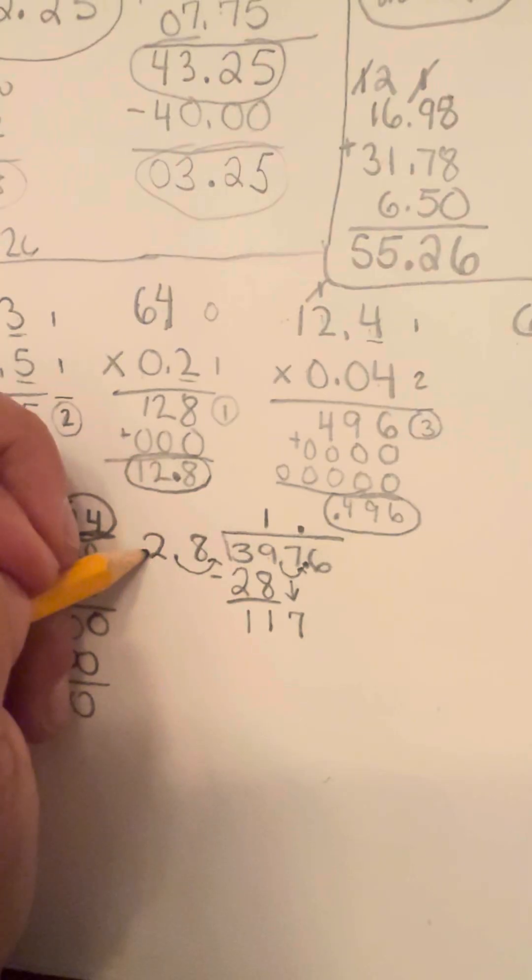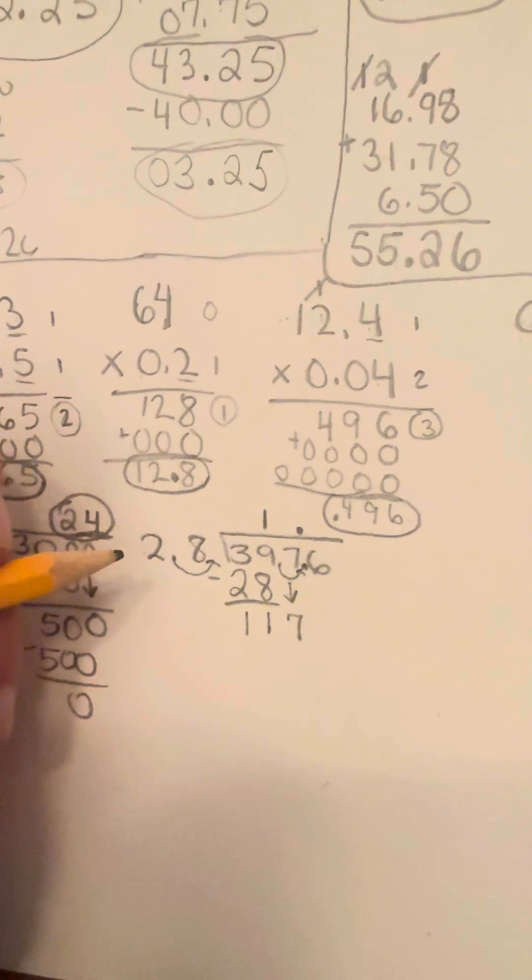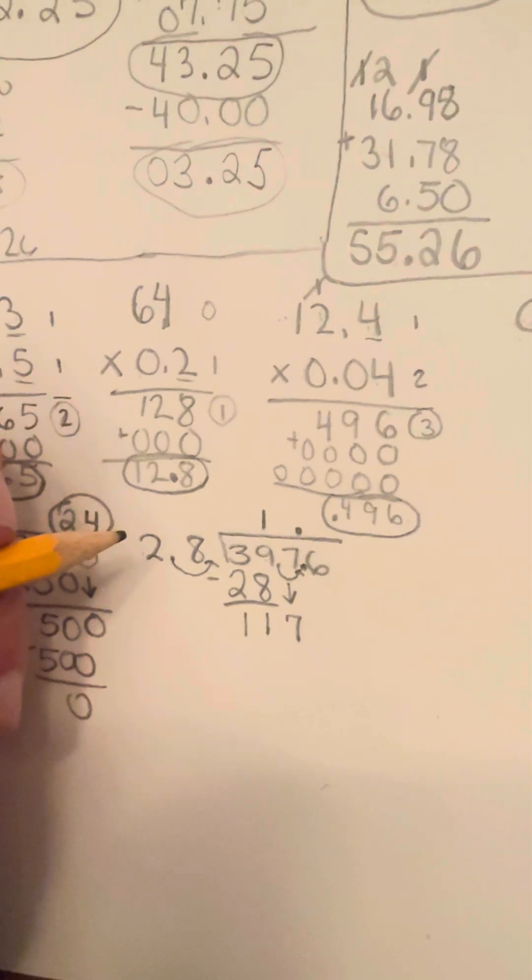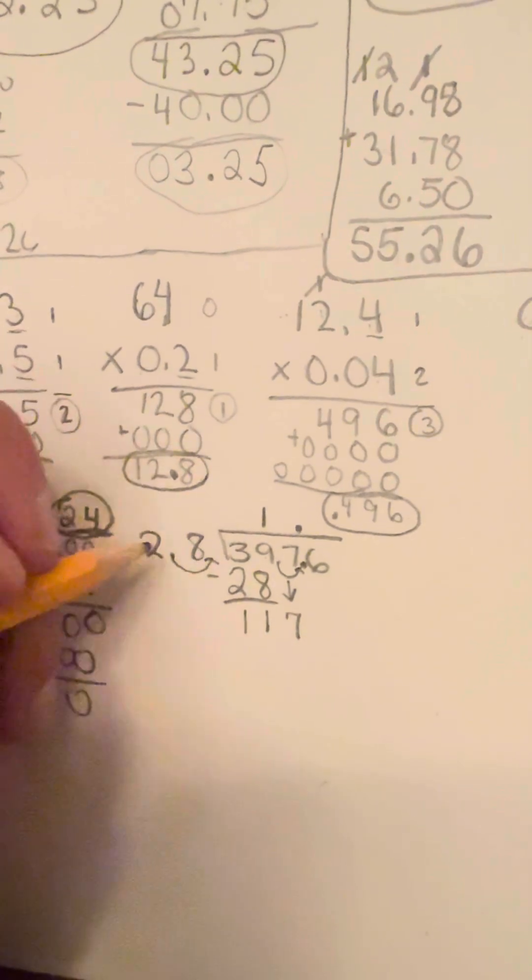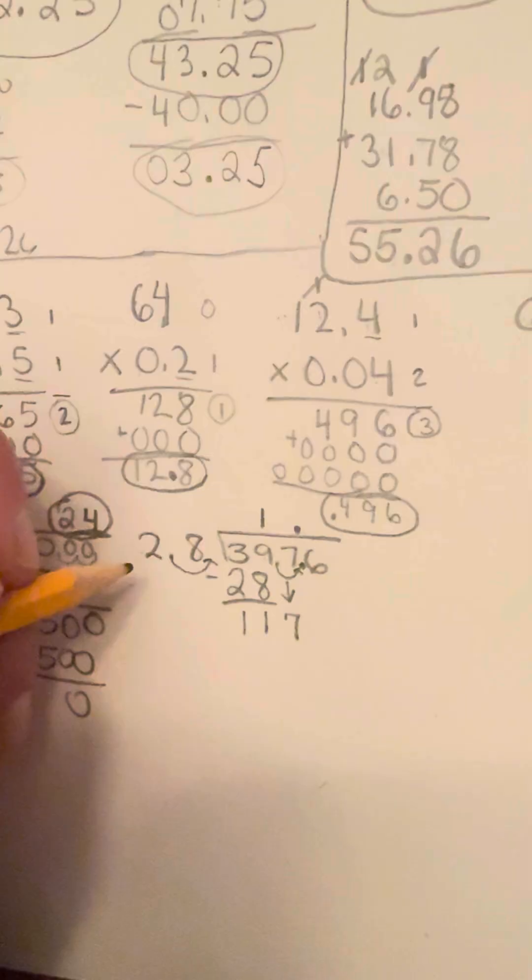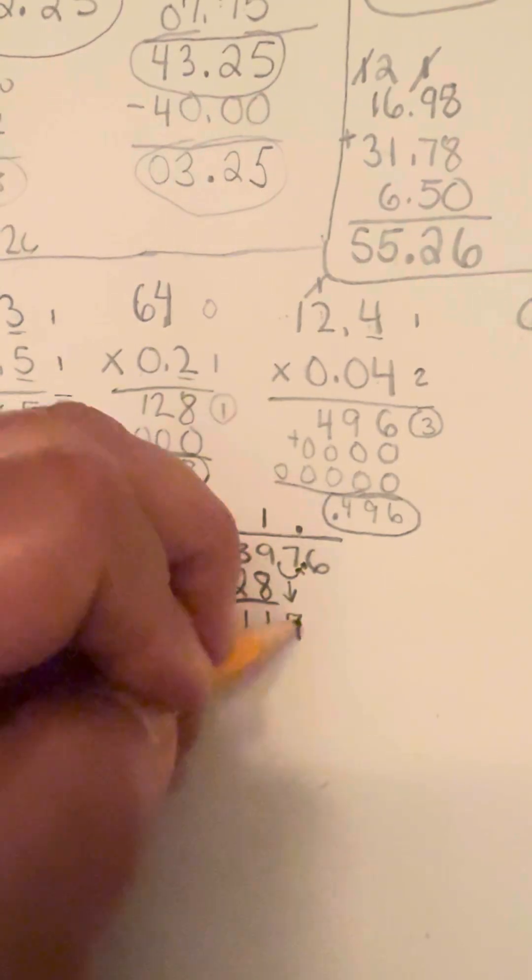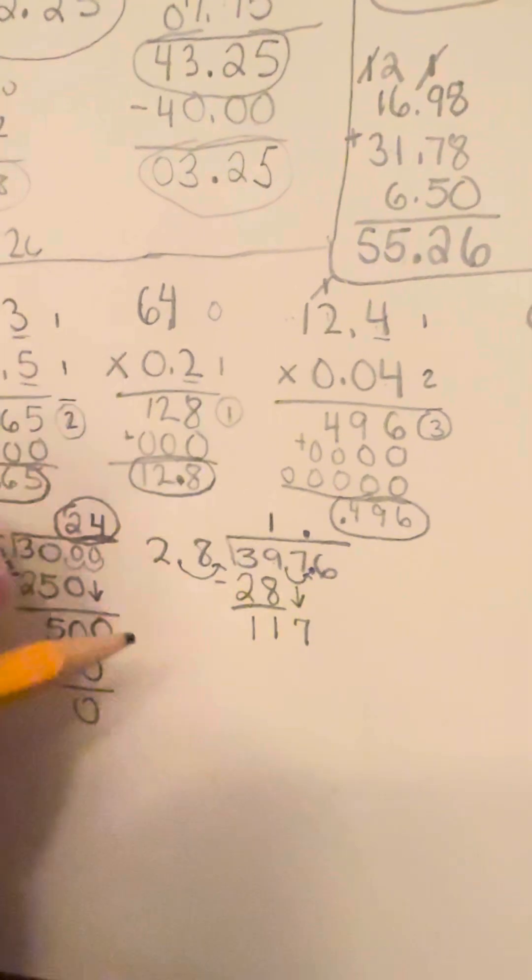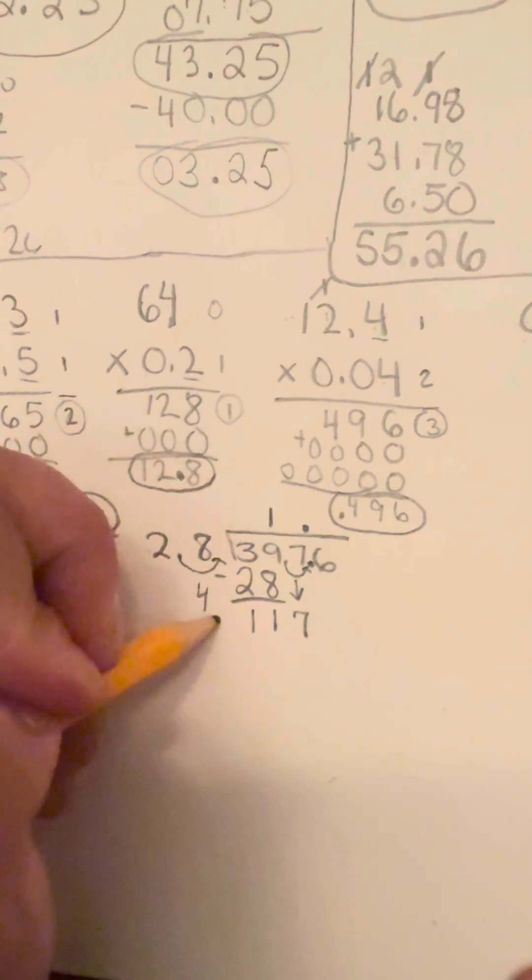So now you have to figure out how many times can 128 go into 117. So the best way to kind of think about how to do this is, my personal way of doing this, is kind of just thinking about, okay, well, if this was roughly 30, I'm just going to kind of round it up. And if this was roughly 120, then it should go in about four times, right? So then we're going to try seeing what happens if I do four times.